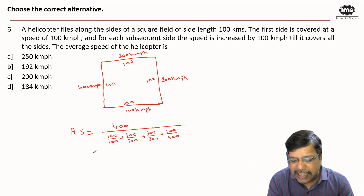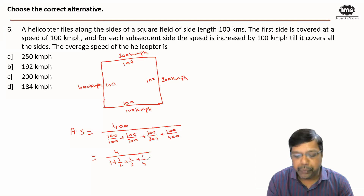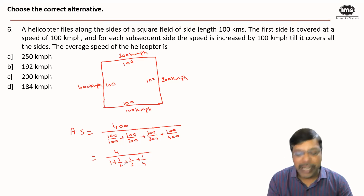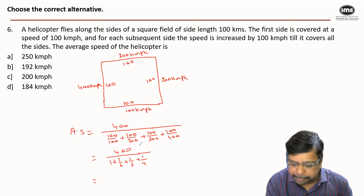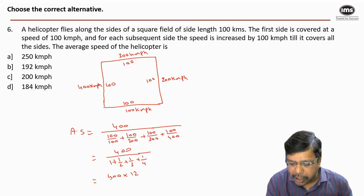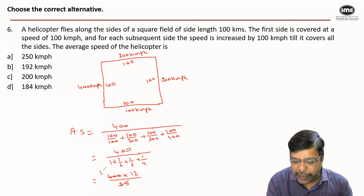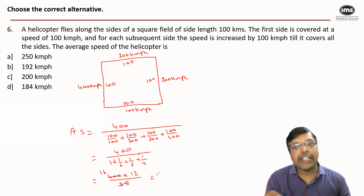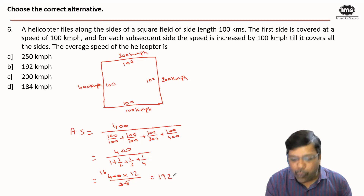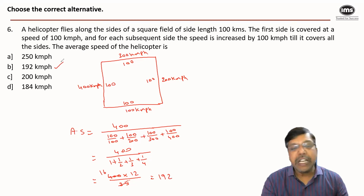Cancelling the hundreds throughout, we get 4 divided by (1 + 1/2 + 1/3 + 1/4). The LCM of the denominator fractions is 12, so this becomes 400 × 12/25. That gives 16 × 12, which equals 192 kmph. Answer option B.